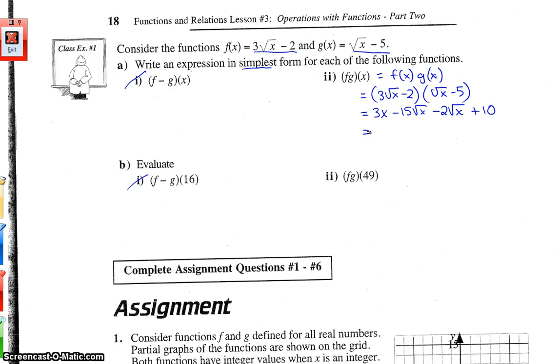Are there any like terms? Now, nothing to collect with the 3x or the 10, but these two terms are alike. So we, the radical part is identical, which it needs to be for them to be alike. Root x, root x, we're good there. So we simply add the coefficients. Negative 15 plus negative 2 is going to be negative, I'll get the 3x written down first, and then we have negative 17 root x, negative 15 and negative 2 plus 10. And there we go. That's our simplified form of the product of f and g.